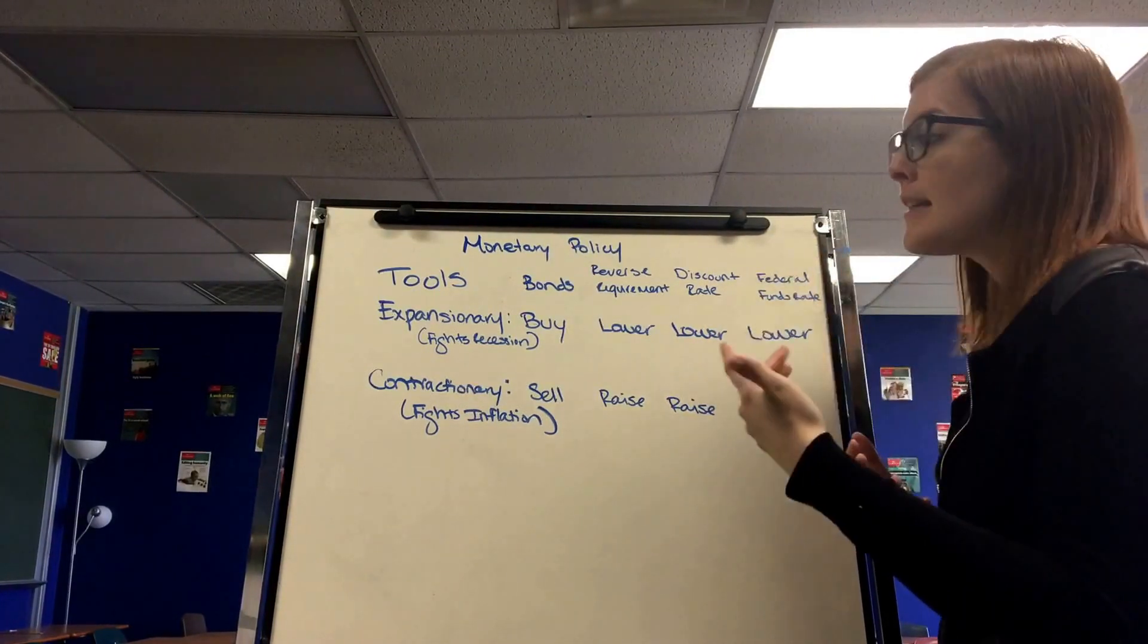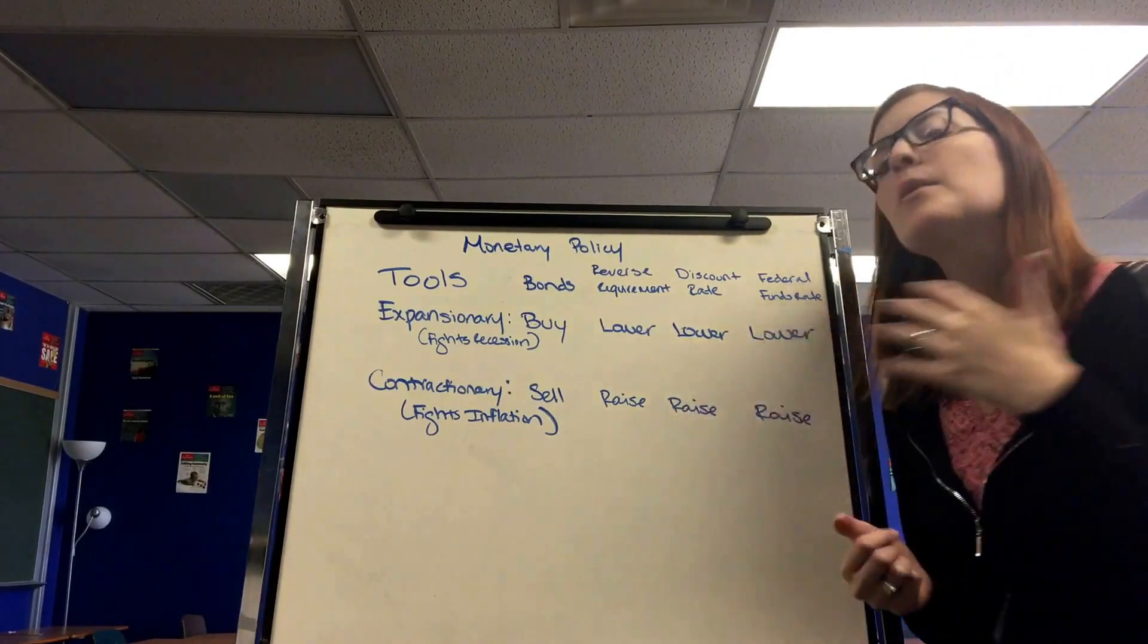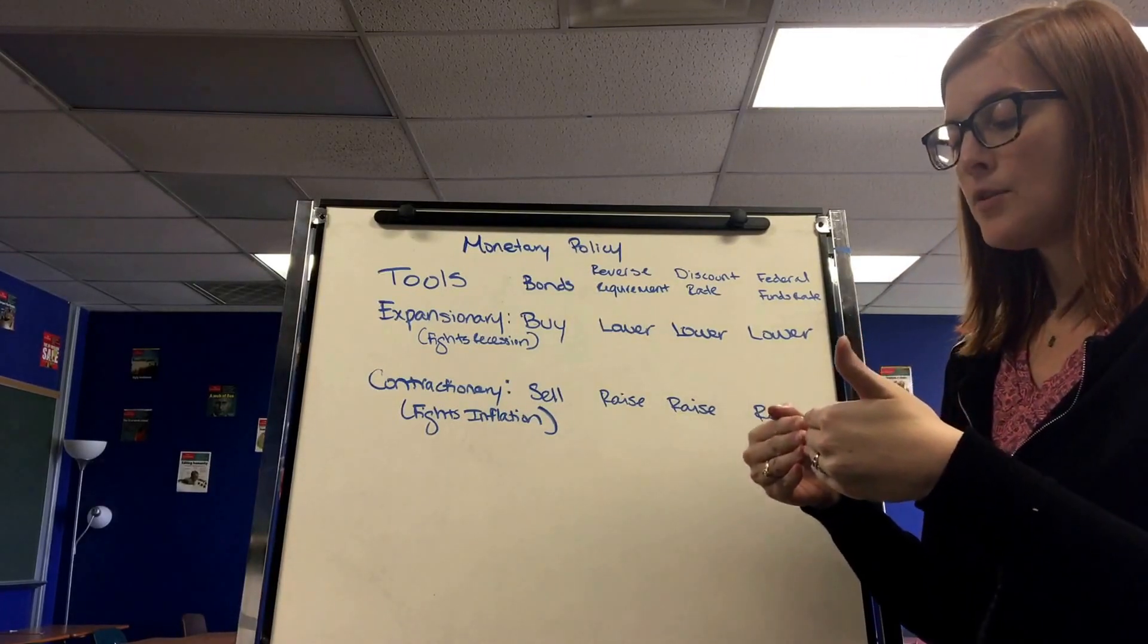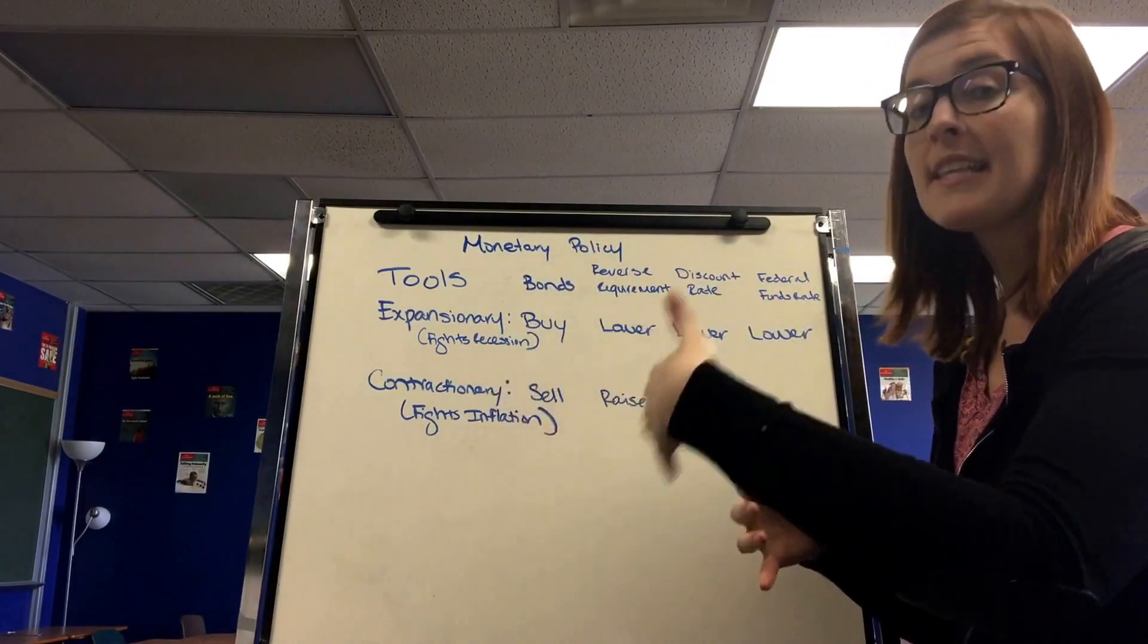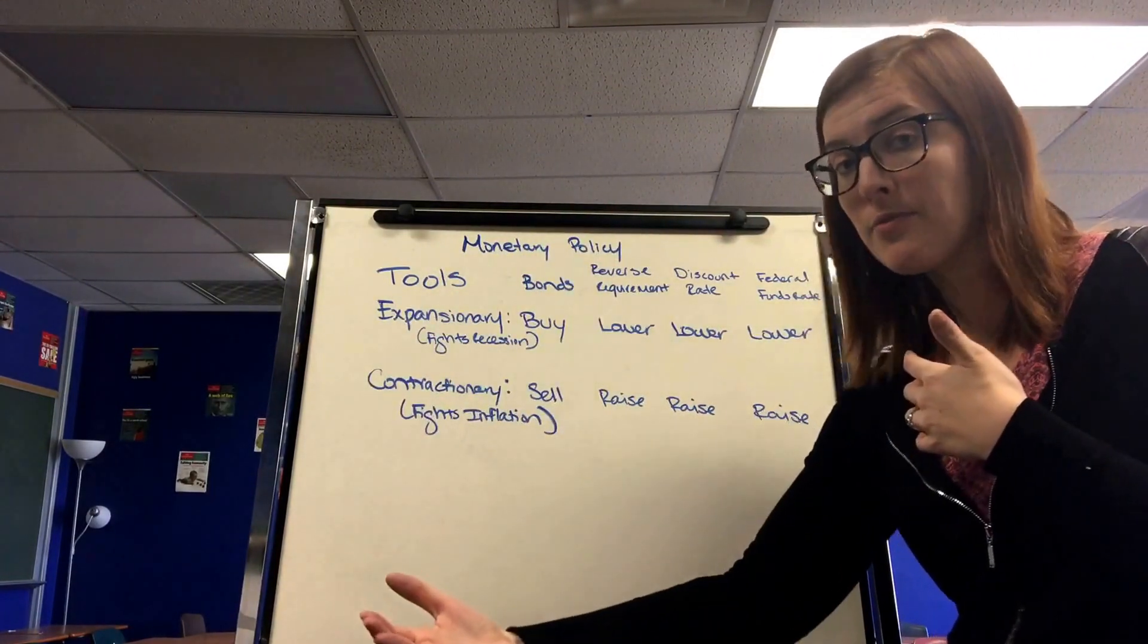So if they are bailing banks out during a recession, they not only will give them a loan, they will give them a loan with a low discount rate. This way banks are able to loan out more money to their customers because they have the money now, but they don't have to pay back as much in interest to the Fed.